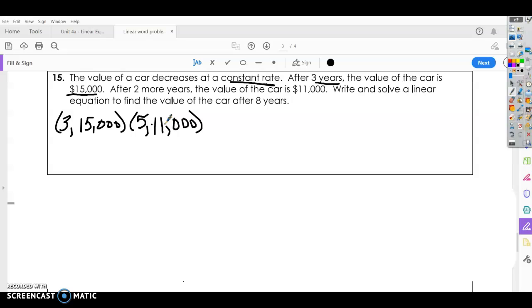Alright, write and solve a linear equation to find the value of the car after eight years. Alright, so that's what we're looking for. First thing we're going to do is take our two points and find the slope. Alright, so y minus y, 11,000 minus 15,000, and then 5 minus 3.